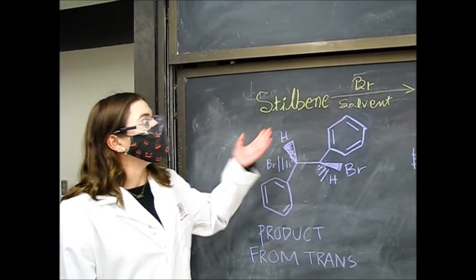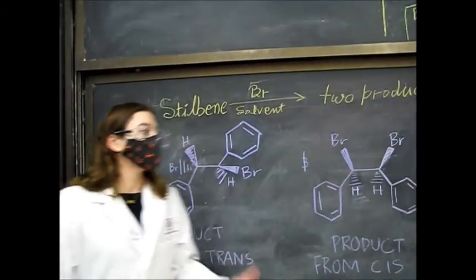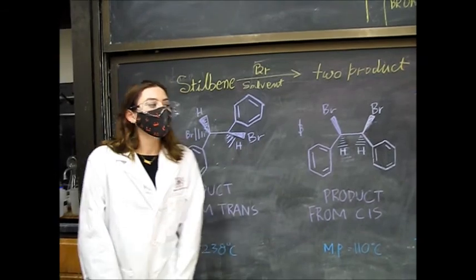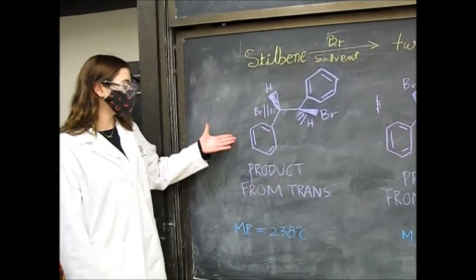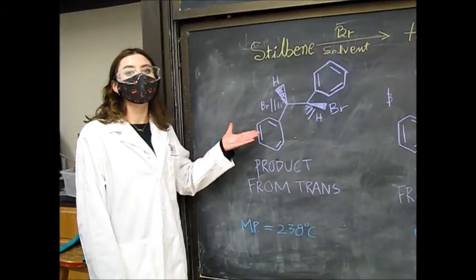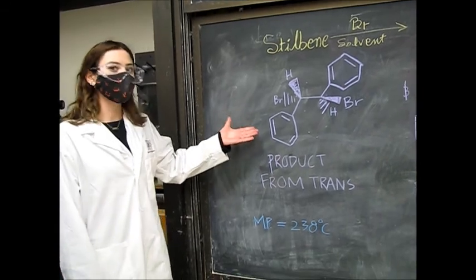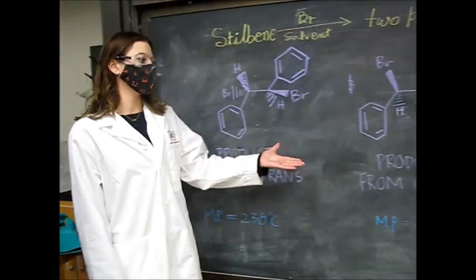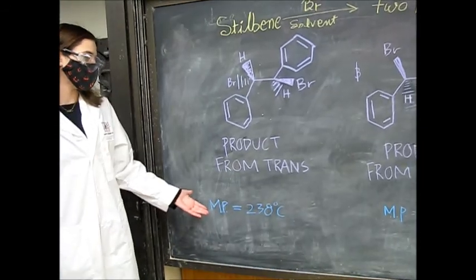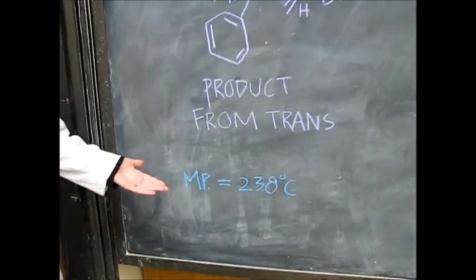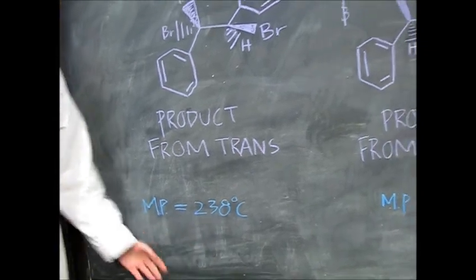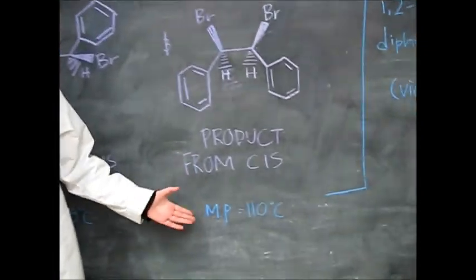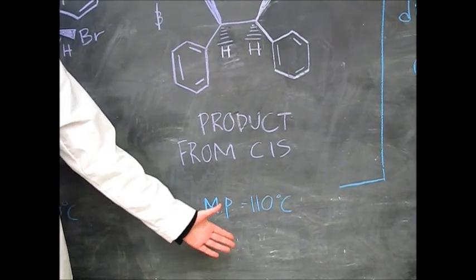From your bromination of stilbene, you can get one of two products. You can either get a trans product or a cis product. The trans product is more thermodynamically stable, and you can determine whether you have this trans product rather than the cis product by looking at the melting point. So the melting point of the trans product is 238 degrees Celsius, which is a lot higher than the melting point of the cis product, which is 110 degrees Celsius.